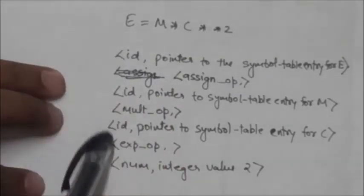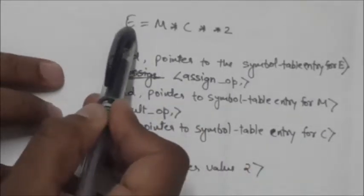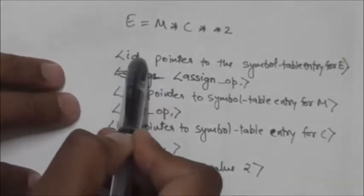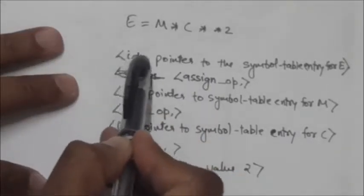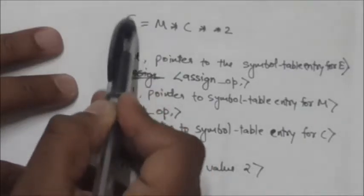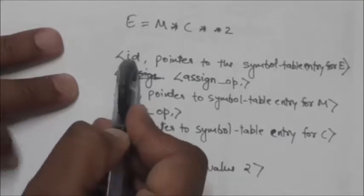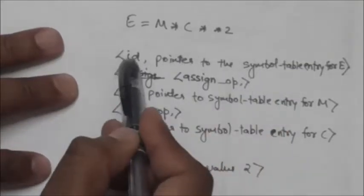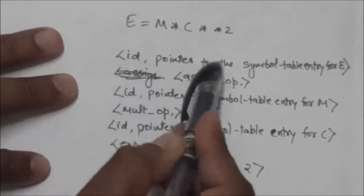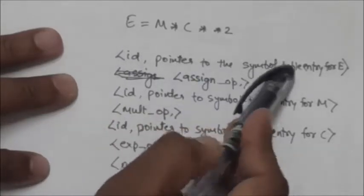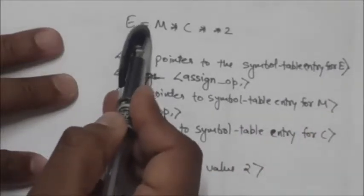Now see this Fortran statement — the tokens and their associated attribute values for this statement are given here as a sequence of pairs. In this statement, the capital E is an identifier. The token for this lexeme E is ID, and the attribute value associated with this identifier token is a pointer to the symbol table entry for E.